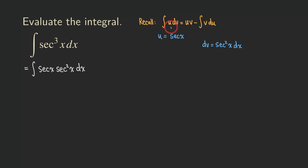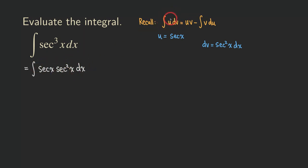As you can see, when u is secant x and dv is secant square x dx, and when you put the u and dv together, you are going to get secant x times secant square x dx, which is exactly this right here. So we're having the integral that matches the left side of this formula. All we need to do is find du and v so that we can fill in the information in this formula.